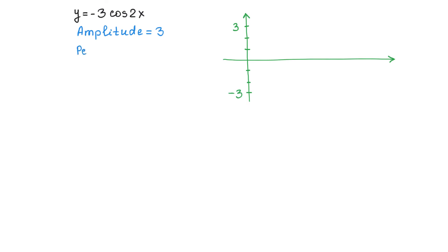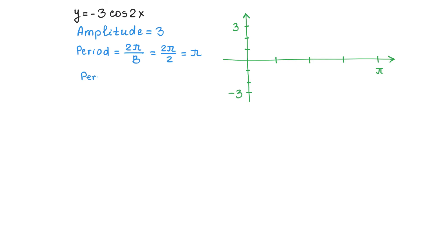To find the period we use the formula 2 pi over b. In this function b equals 2, so 2 pi divided by 2 equals pi. On the x-axis I will plot pi. To find the coordinates of the 5 points, I will split this interval into 4 subintervals. The length of each subinterval is found by dividing the period by 4: pi divided by 4 equals pi over 4. So each subinterval has length pi over 4.